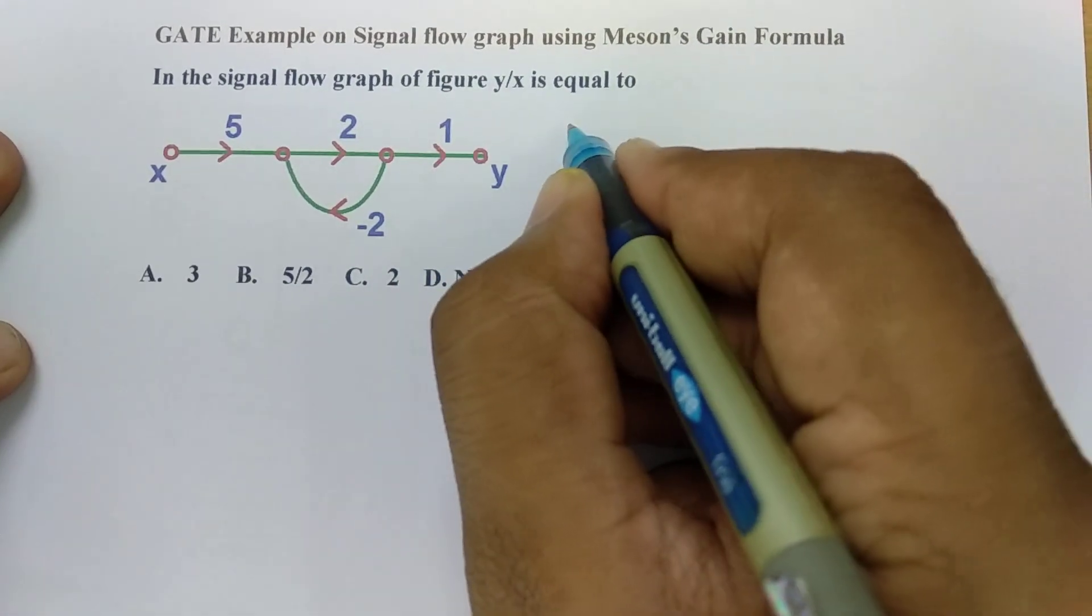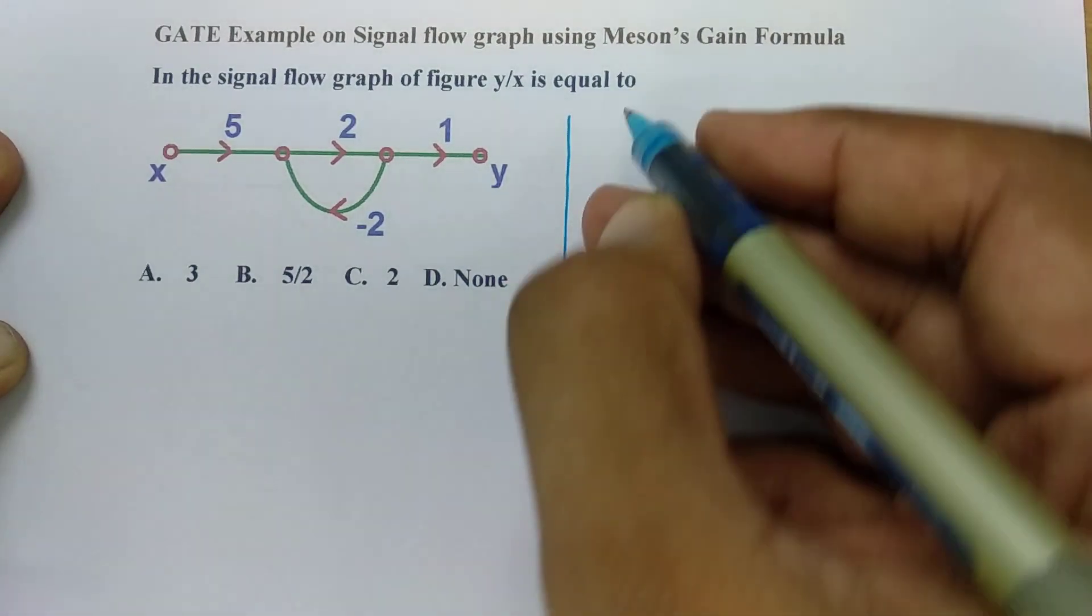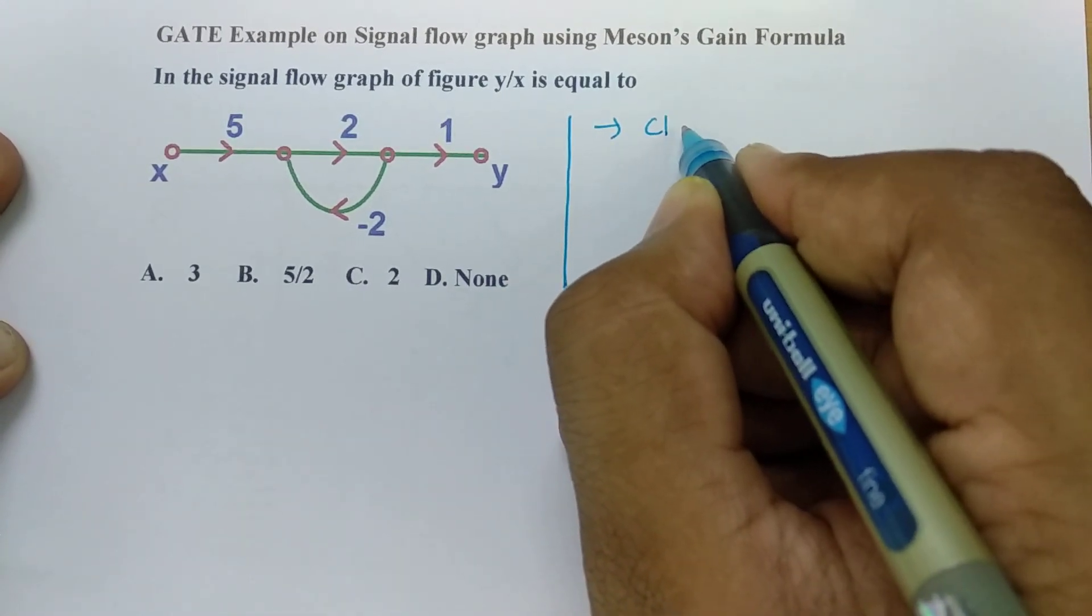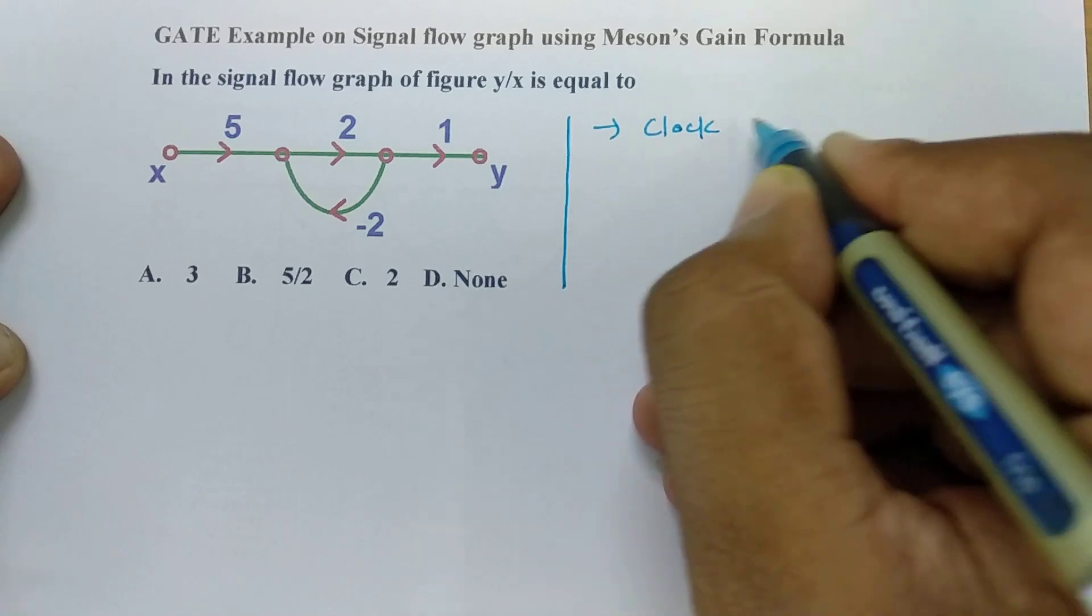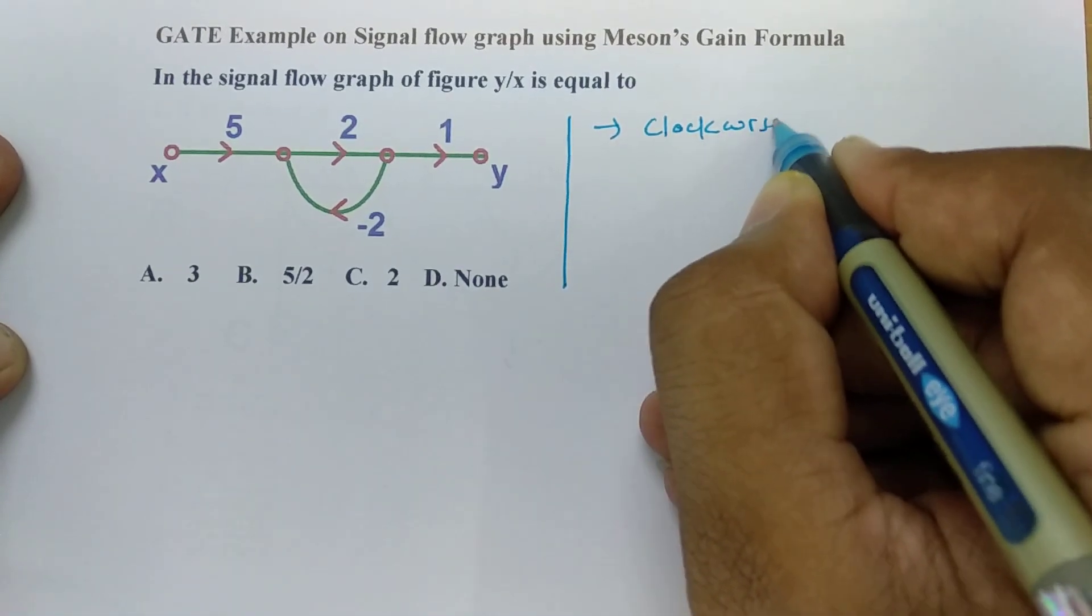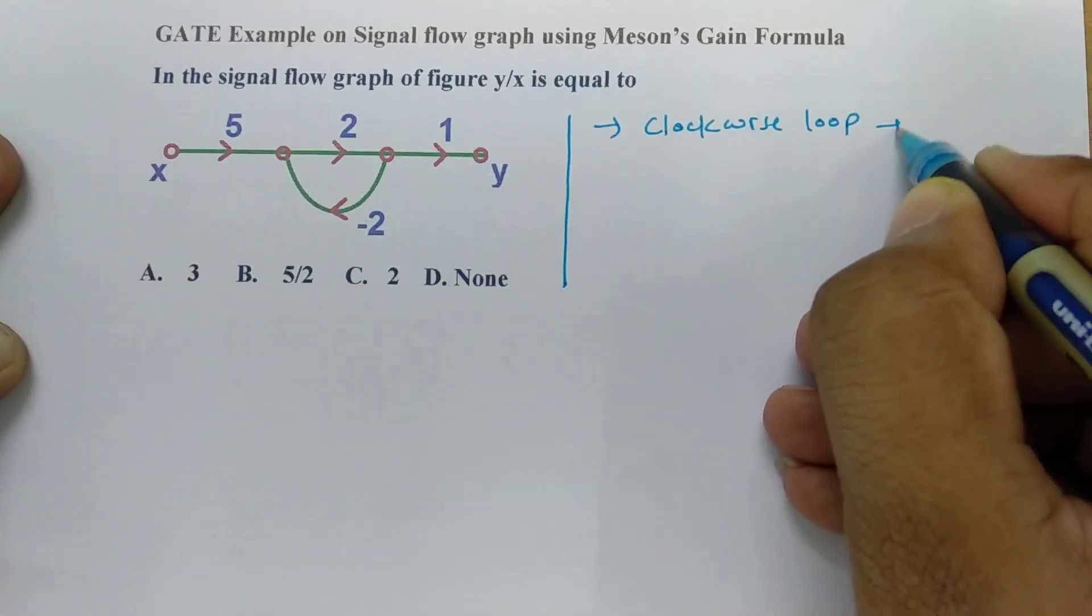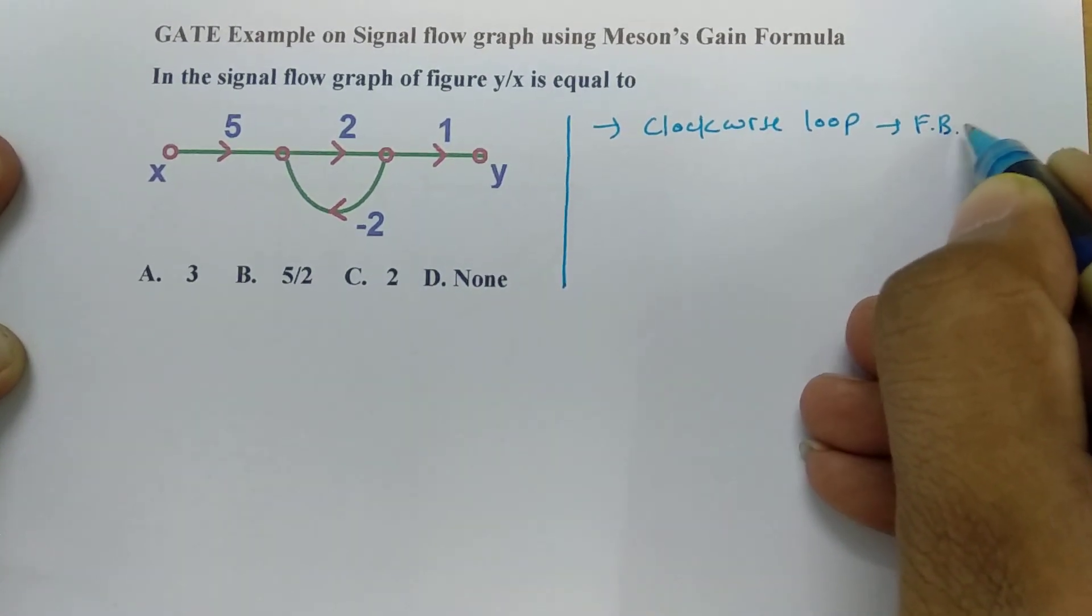Now already in one of my examples I have told if you have loop in clockwise direction then one can say feedback that is negative.